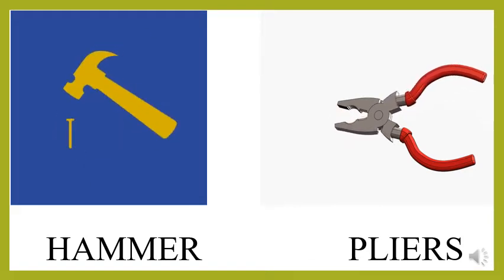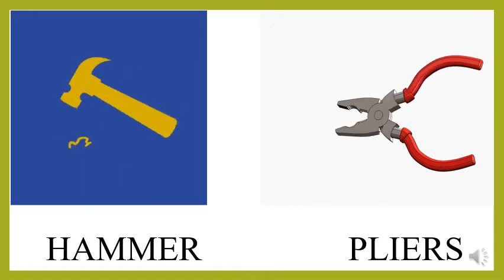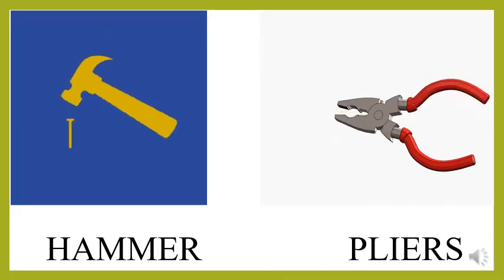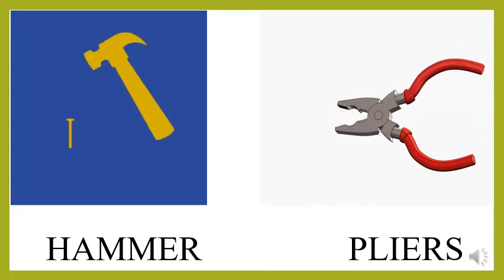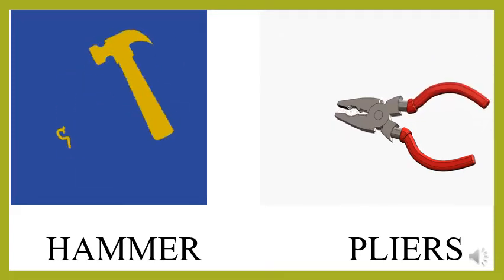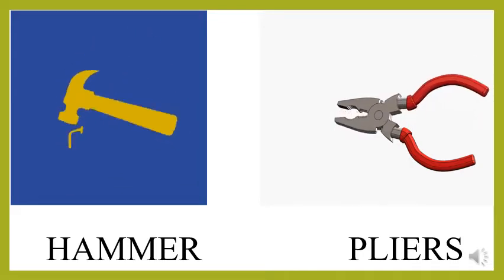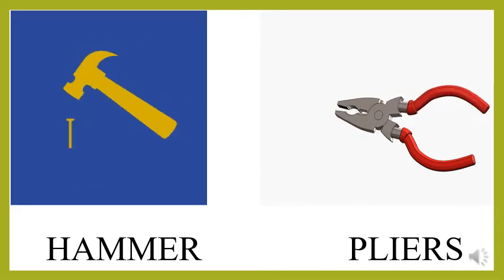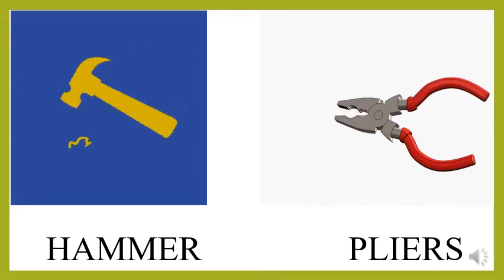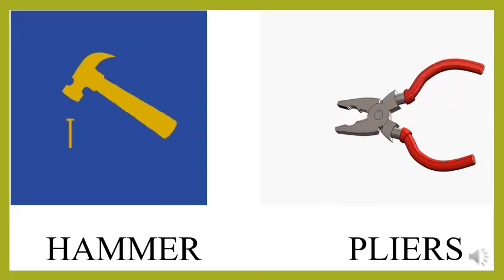We know that a hammer is used to fix a nail or to drive nails into wood, to shape metal, or to crush rock. Another one is the pliers, and with the help of pliers we are cutting wire, and sometimes we are bending and compressing a wide range of materials.